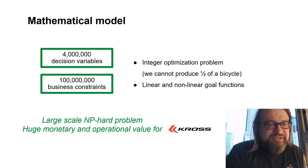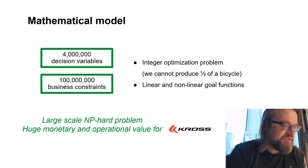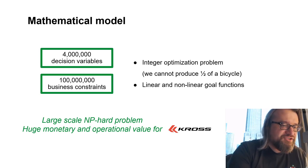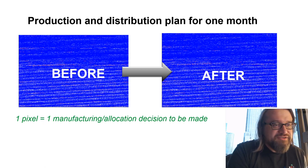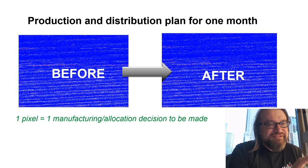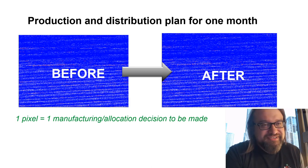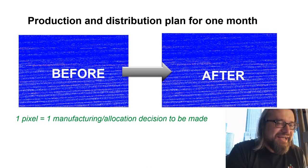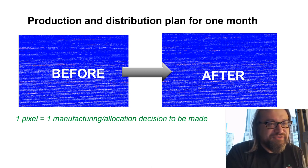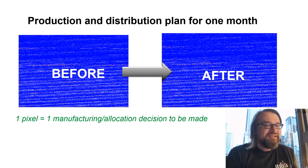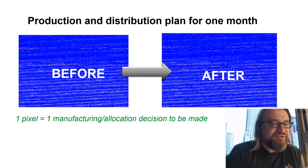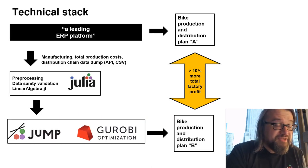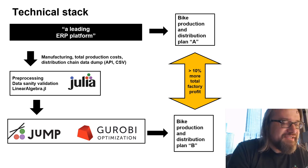This is an integer model because we cannot produce half a bike — we cannot give a shop half a bike — so all values need to be integers, which adds additional computational complexity. To illustrate the complexity, consider two possible bike manufacturing and distribution plans with small visual differences. The difference between these two plans is 10 percent profit, meaning small movements in allocation can lead to huge differences in the profitability of the company.